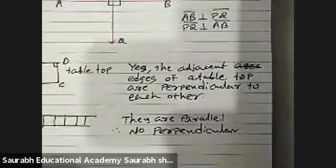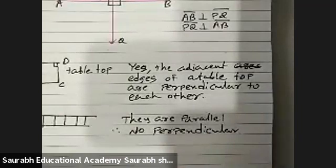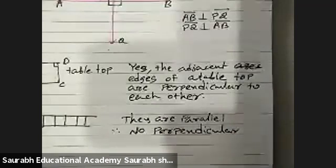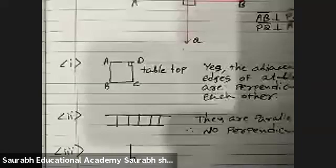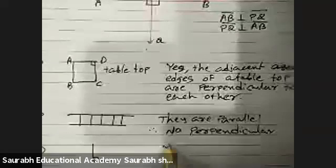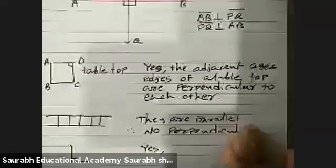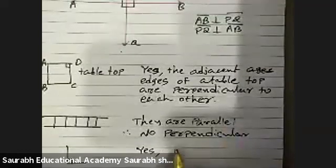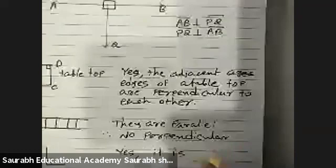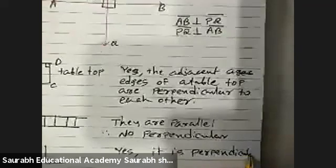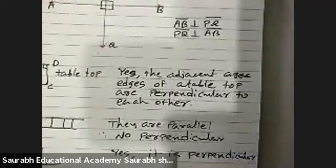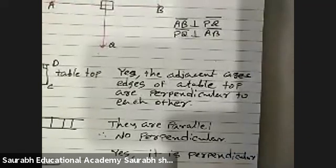Third shape is given: line segment forming letter L in English. Letter L, this is right angle. We can write here it is perpendicular.